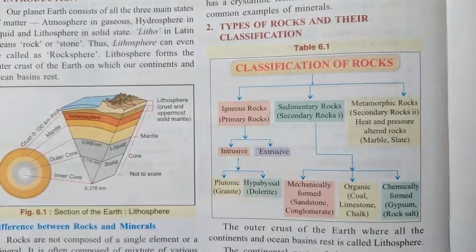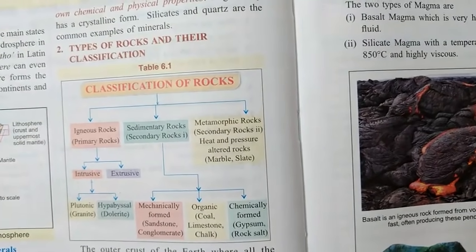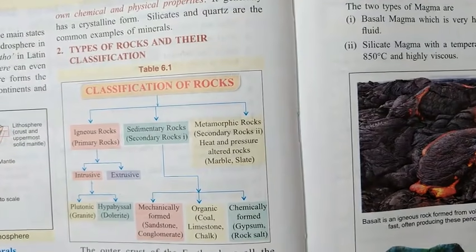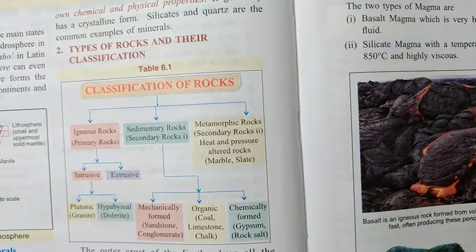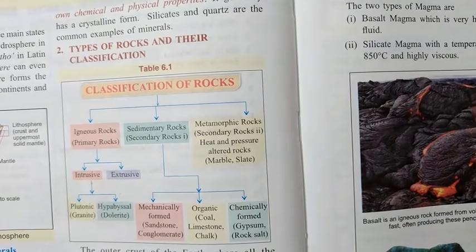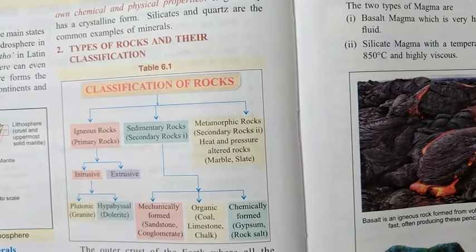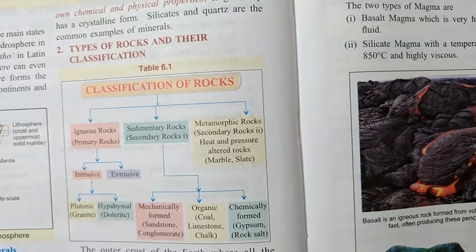Before we start the types of rock, let me explain the difference between rocks and minerals. A rock actually contains many minerals, so a rock can be defined as the aggregate of minerals. In simple language, rocks are the aggregate of minerals, formed by one or more definite units of the earth's crust, and they may contain many different types of minerals.